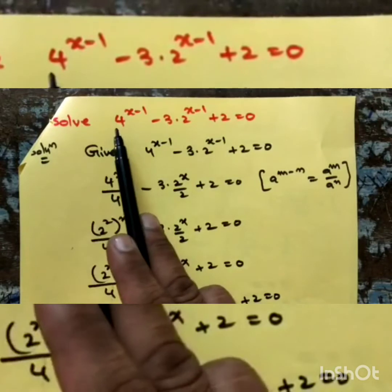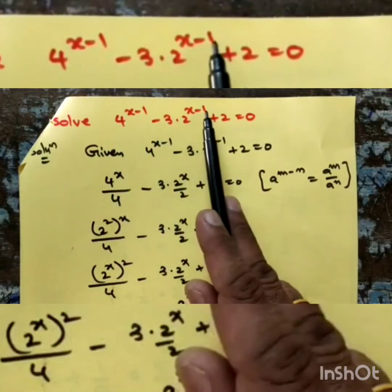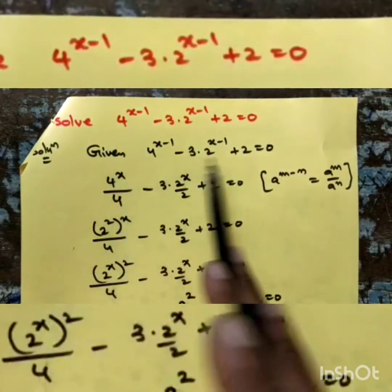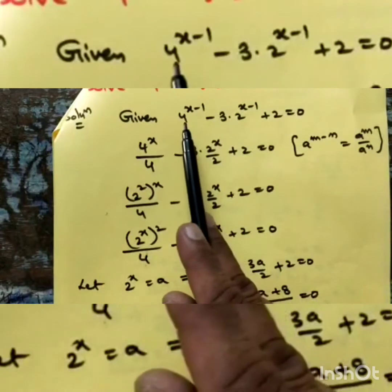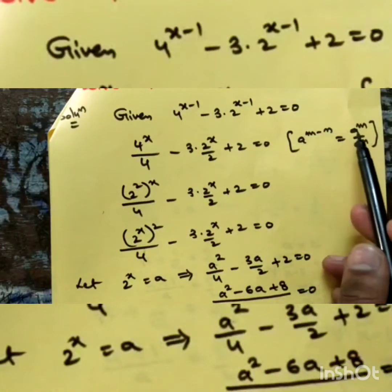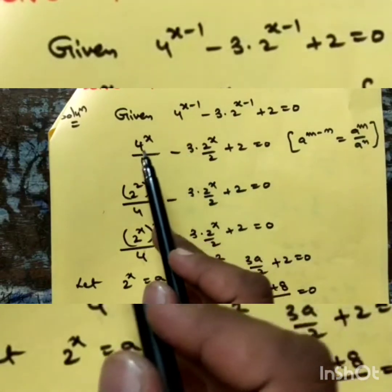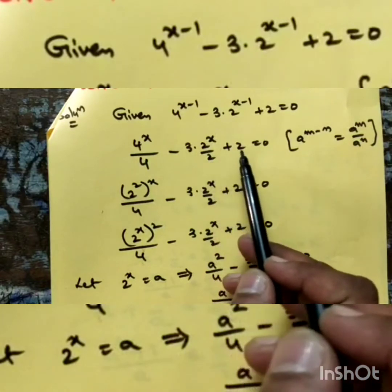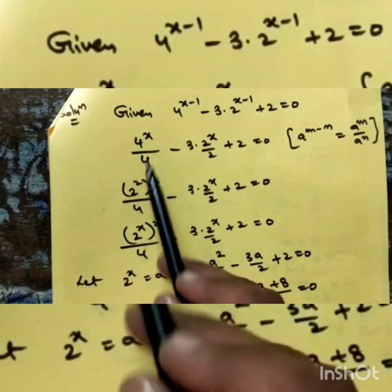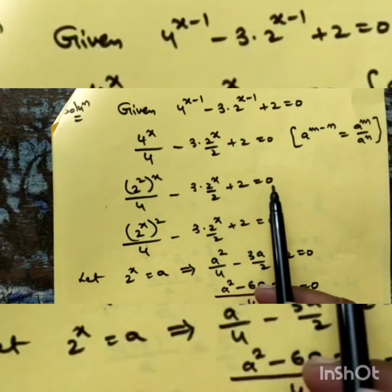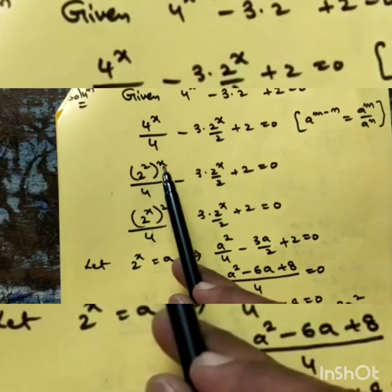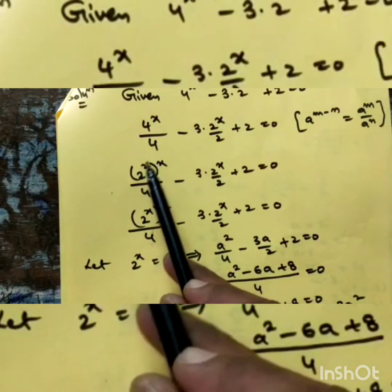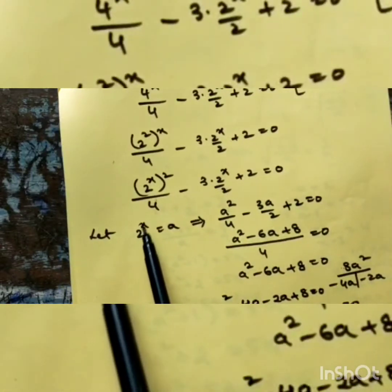One more problem from 2a quadratic expression. Solve: 4^(x-1) - 3·2^(x-1) + 2 = 0. Applying the exponent rule a^(m-n) = a^m / a^n, rewrite as 4^x/4 - 3·2^x/2 + 2 = 0. Writing 4 as 2², the first term becomes (2^x)²/4. So the equation is (2^x)²/4 - 3·2^x/2 + 2 = 0. Let a = 2^x.